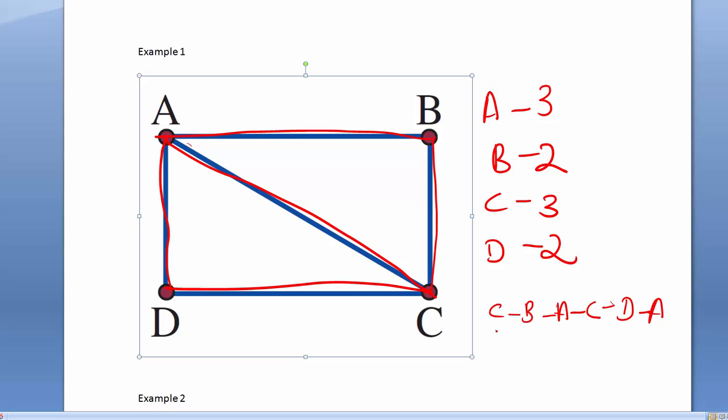So, you'll notice that we started at C, finished at A. That's an Eulerian path. Now, an Eulerian circuit is an example of an Eulerian path, but what will happen is it starts and finishes, or it will start and finish at exactly the same vertex.